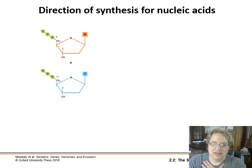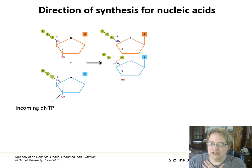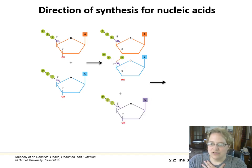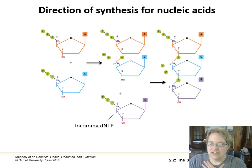With our incoming dNTP, what's going to happen is there's a release of energy — the two phosphate groups fly off — and the one remaining phosphate group forms a bond between the 5' carbon and the 3' carbon of the growing chain. Another nucleotide shows up and its phosphate off the 5' carbon links to the 3' carbon, making the DNA chain longer and longer. This end is the 3' end and this end is the 5' end — nucleotides are added to the 3' end.